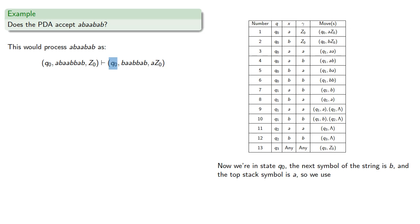Now we're in state q0, the next symbol is b, and the top stack symbol is a. We use the delta transition, so we change to state q1 and replace the top stack symbol a with ba. This means the stack is now ba, but Z0 is pushed further down.